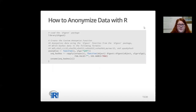Now to anonymize our dataset, we need to first create a custom anonymize function. This function will need the digest package, so we'll load that first. Then we'll define anonymize as a function of an object X and a hashing algorithm with the default set to MD5. There are nine different hashing algorithms to choose from in the digest package for different use cases, but I decided to use MD5 here for simplicity.